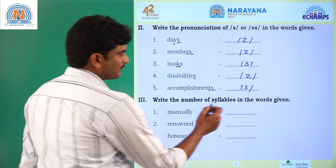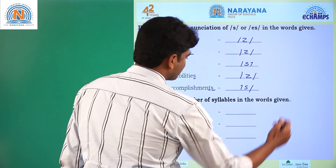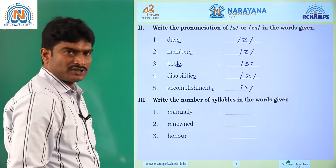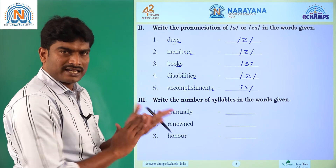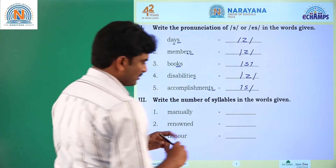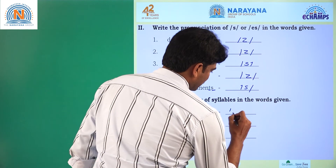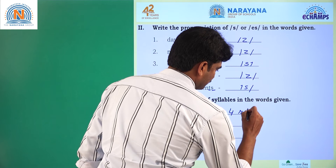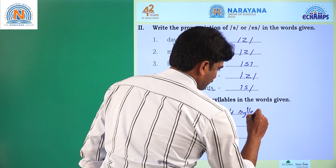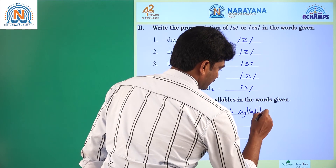Coming to Roman number 3: write the number of syllables in the words given. Here, manually — ma-nu-a-li — here 4 syllables are there, so the answer is 4 syllables.